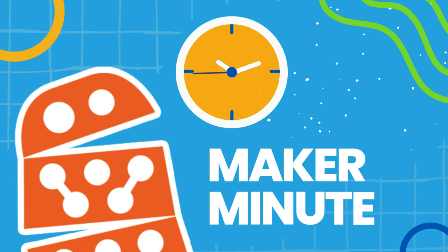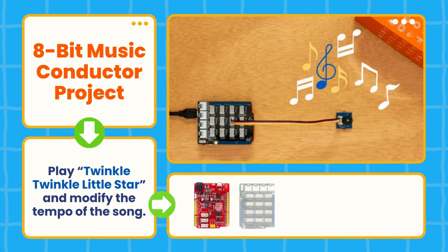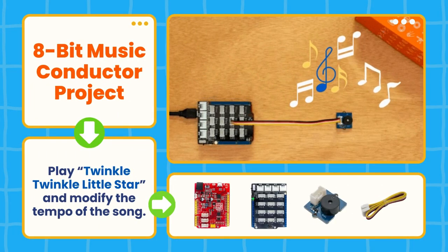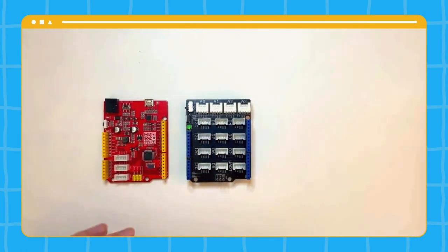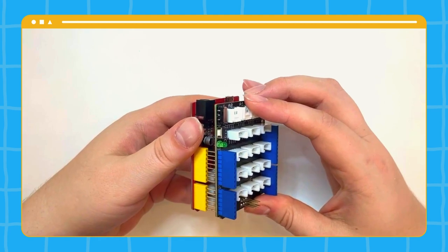In this Thimble.io Maker Minute, we're creating an 8-bit music conductor to play Twinkle Twinkle Little Star. Let's dive in! To begin, let's connect our base shield to our Arduino. The base shield makes it super simple to